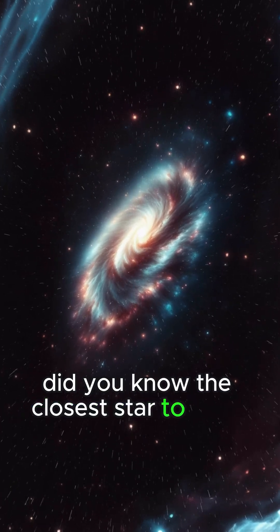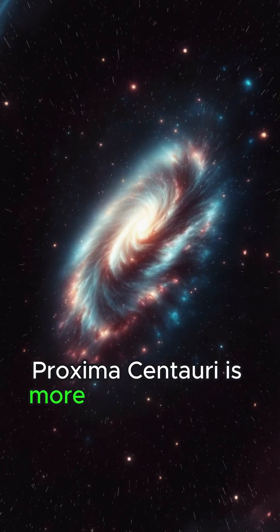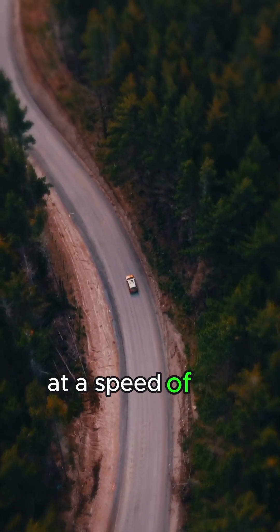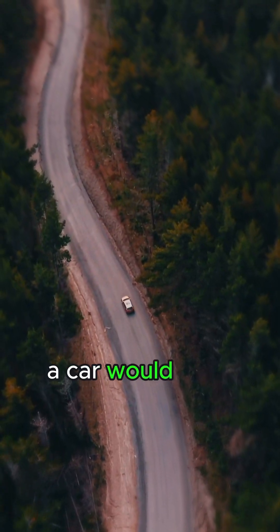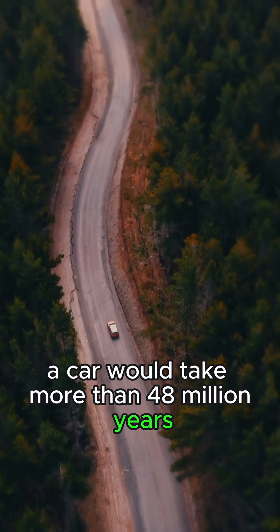Did you know? The closest star to Earth, Proxima Centauri, is more than four light years away. At a speed of 60 miles per hour, a car would take more than 48 million years to reach this star.